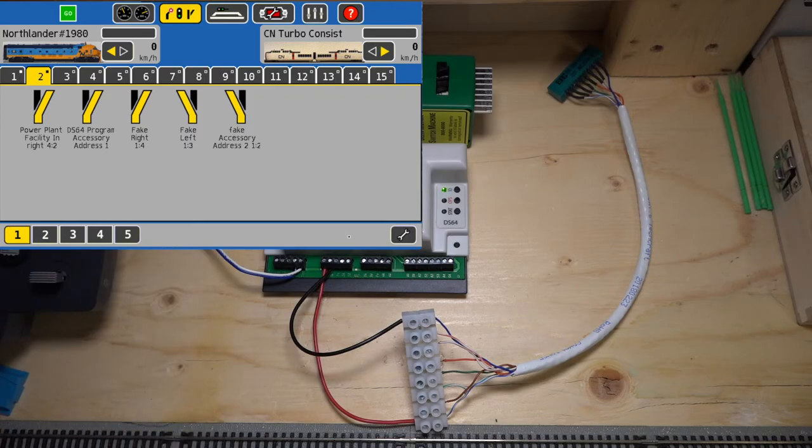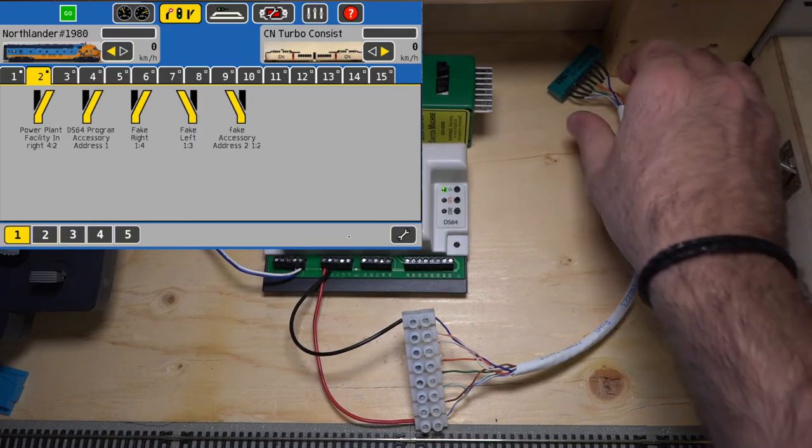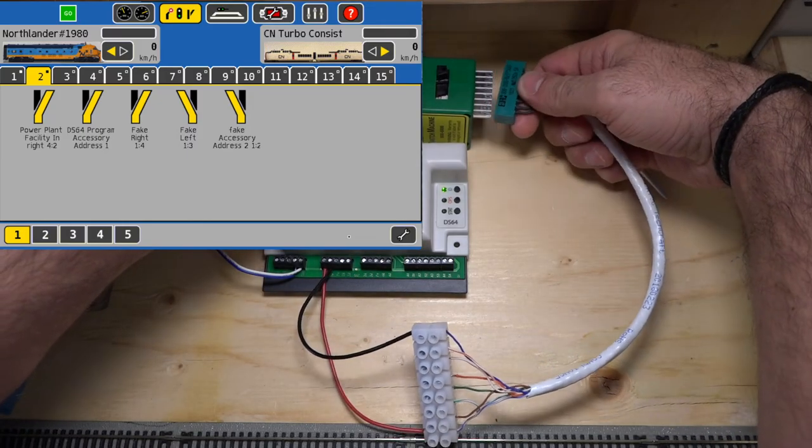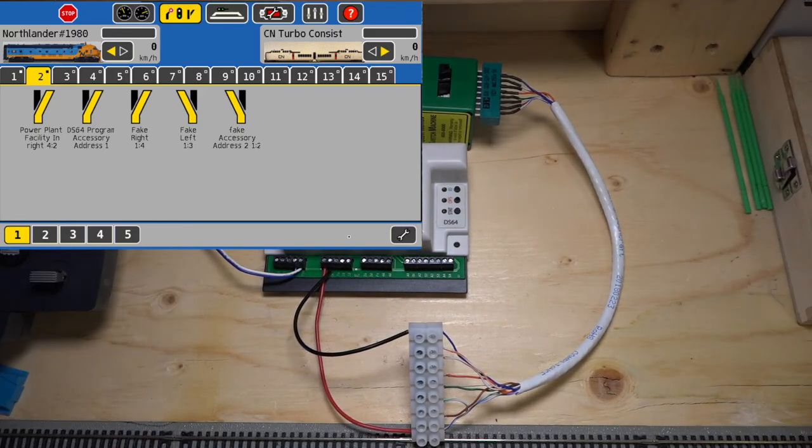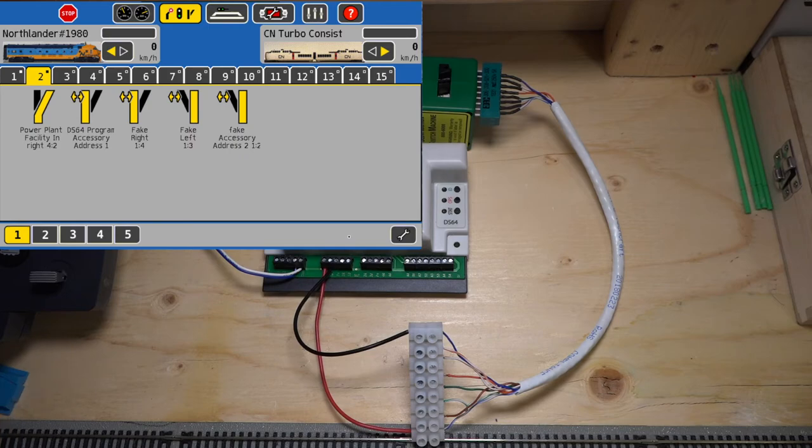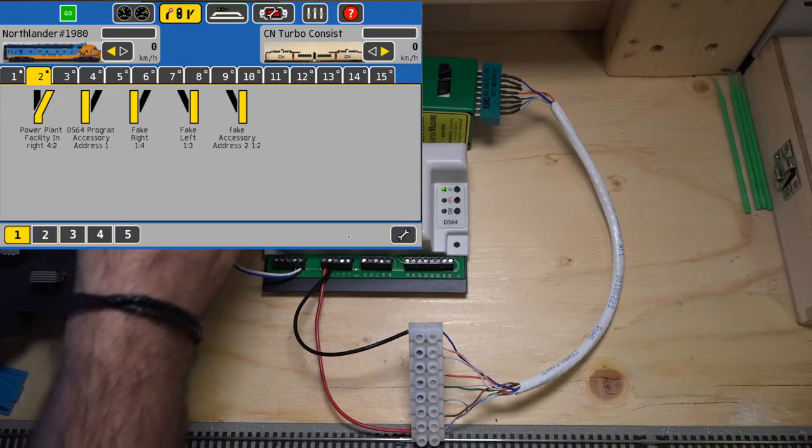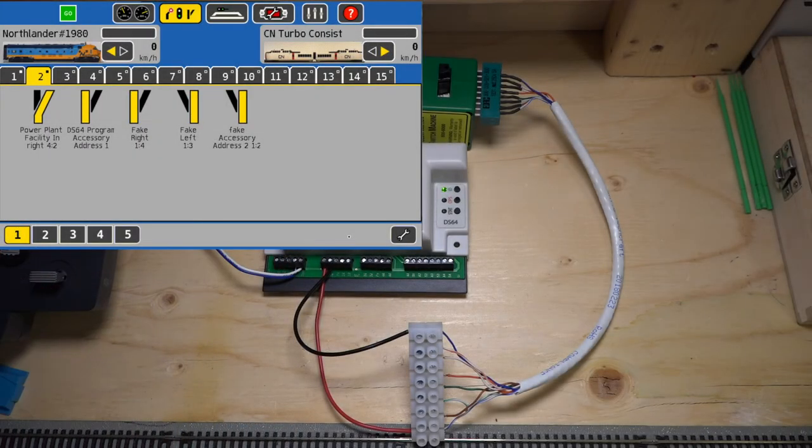So let's try out the DS64. Next we want to do is plug it in since that we track power off. Plug in the tortoise and let's put all of these accessories on straight. Turn the power back on. See, we saw it's switched. All right. So let's see if it actually works. Let's go ahead. Press that address number one. Yay. It works.